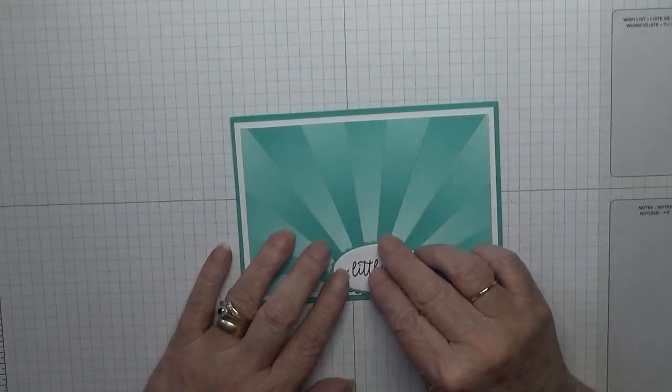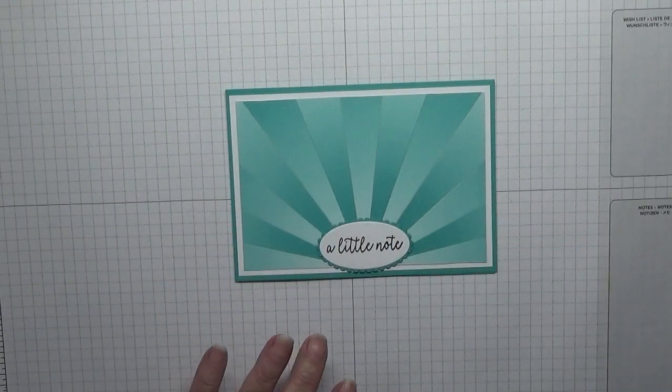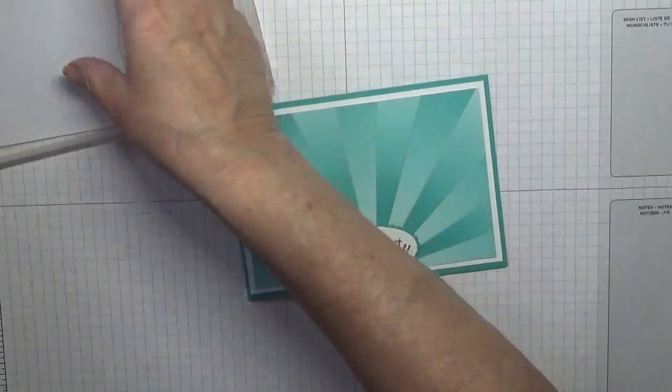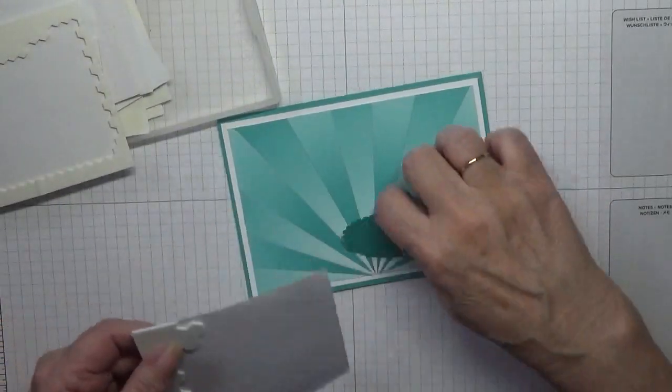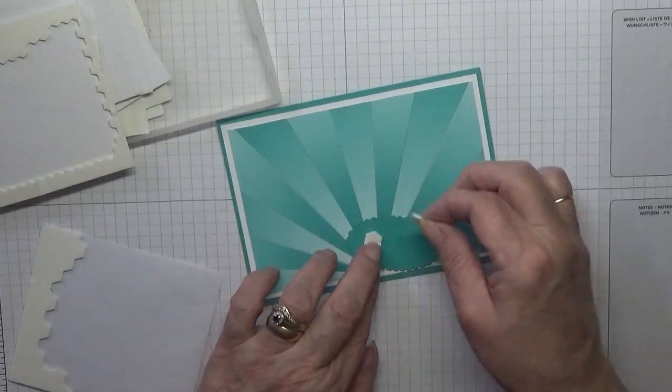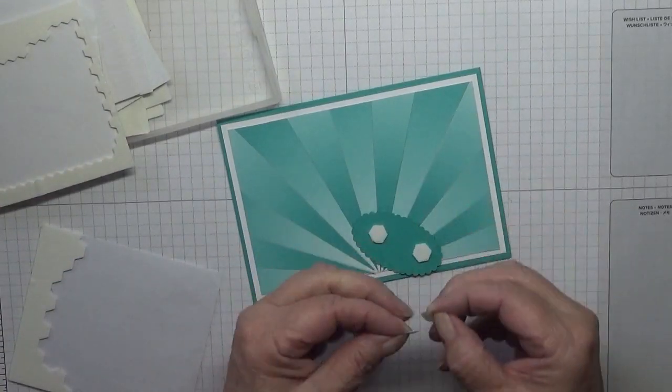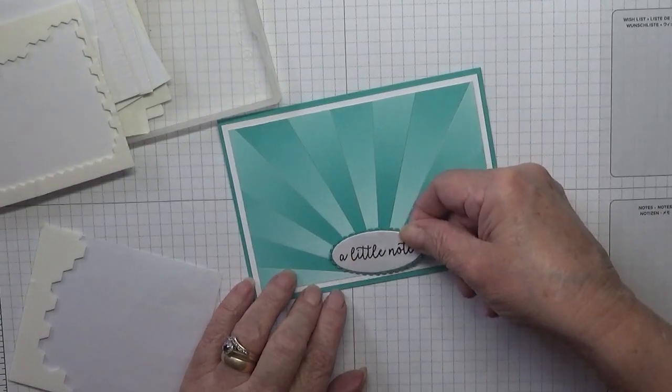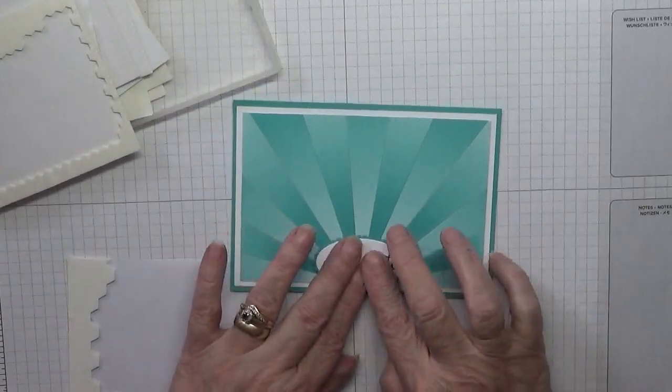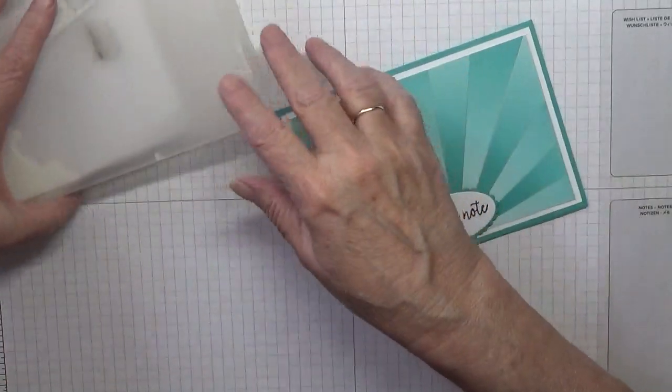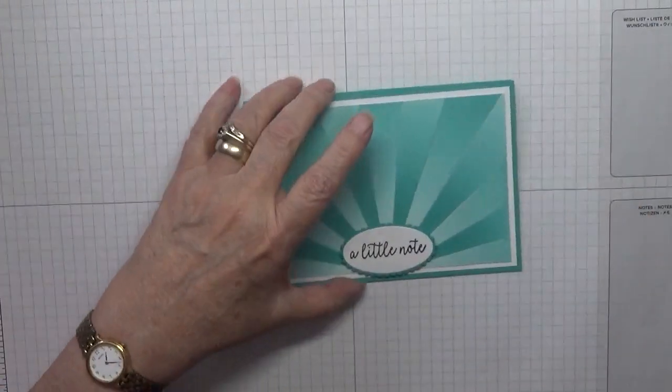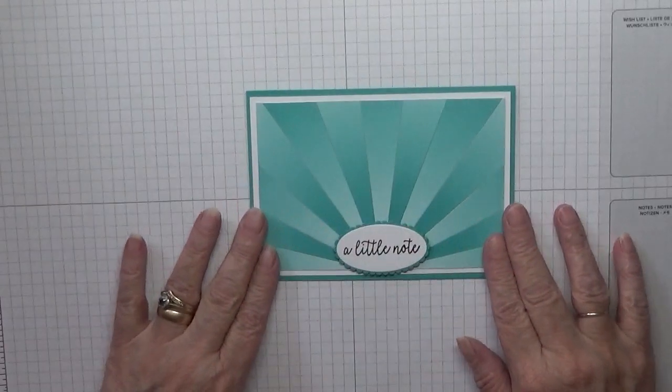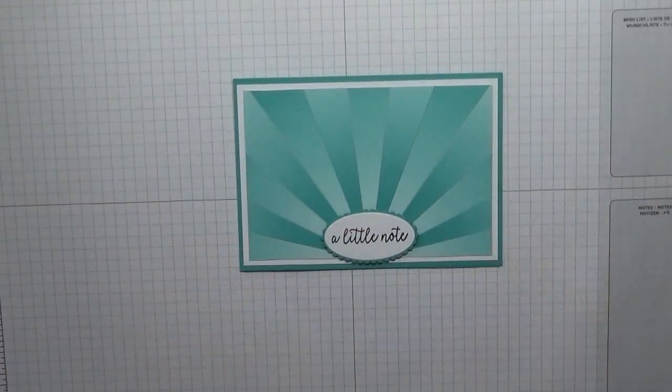And then we'll put this on the card with dimensionals. So we need to pick the box up upside down. And that will go there, like that. Once I cut some more white card up, I shall pop a piece in the middle. Didn't realize I was out of it.